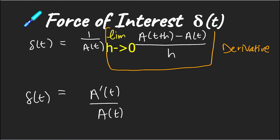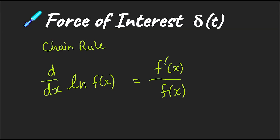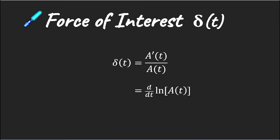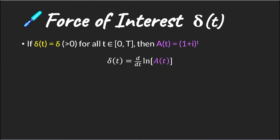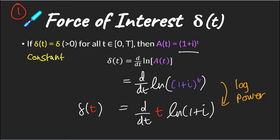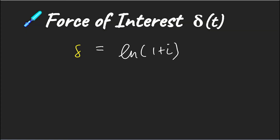We now have our force of interest function expressed as a function of an accumulated value. To tidy this up further we can use the chain rule, giving us our force of interest function expressed in two different ways. We can use this to work out what our accumulation factor will be. For the case of a constant force of interest, an accumulation of one at time t is simply (1+i)^t — our compound interest formula. Plugging this in and using the log power rule, since the resulting formula no longer has t in it, we're left with ln(1+i), which we've already seen in the previous video.